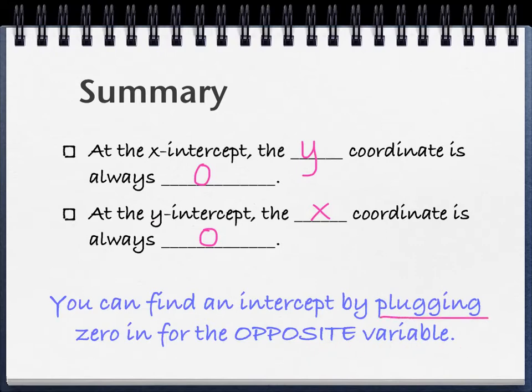We're going to plug in 0 for the opposite variable — meaning if I'm looking for the y-intercept, I'm putting 0 in for x; if I'm looking for the x-intercept, I'm putting 0 in for y. No matter what your equation looks like, no matter what form I give it to you in. In fact, this works even if it's not a linear equation. When we get into quadratics and I ask you for the y-intercept, this is what you're going to do. So you're always plugging in 0 for the opposite variable to find an intercept.